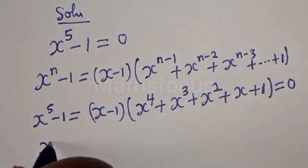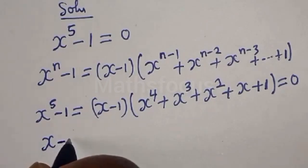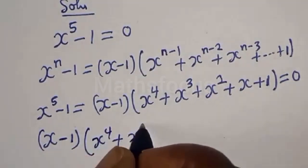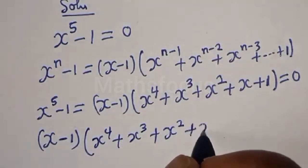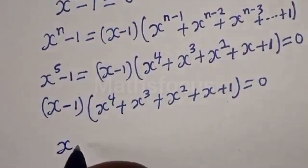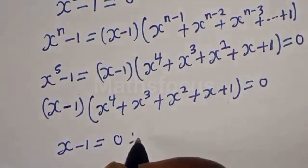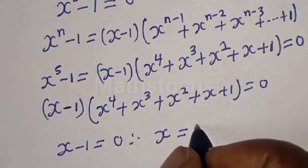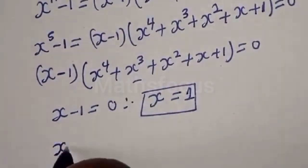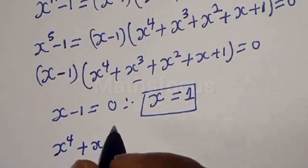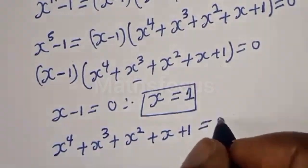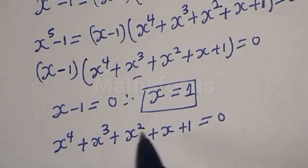Now we have x minus 1, bracket x raised to power 4 plus x raised to power 3 plus x squared plus x plus 1, is equal to 0. Now there are two cases here. Case one: x minus 1 is equal to 0, therefore x is equal to 1. And the second case is: x raised to power 4 plus x raised to power 3 plus x squared plus x plus 1 is equal to 0.